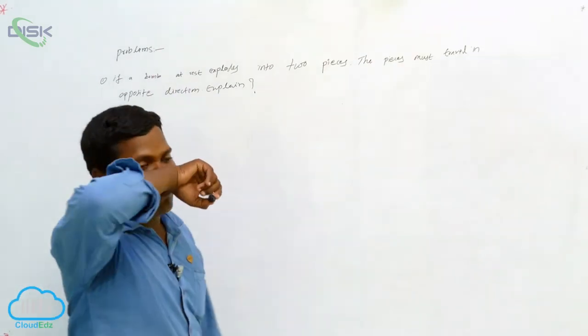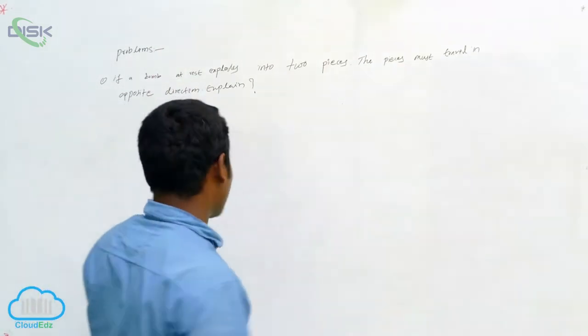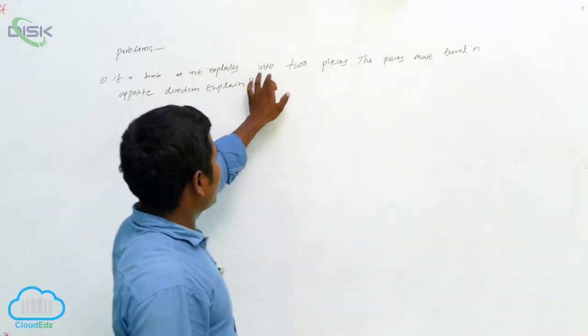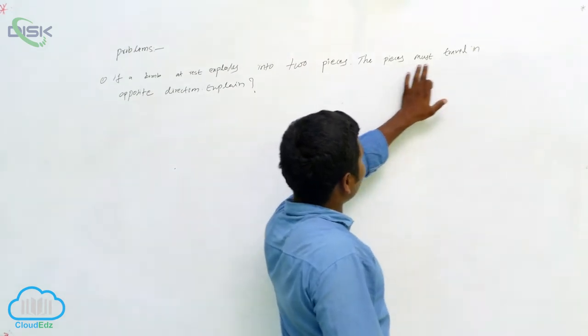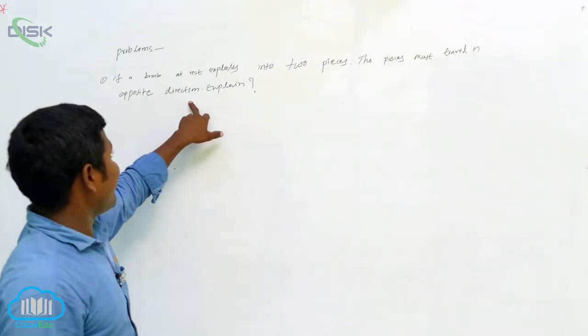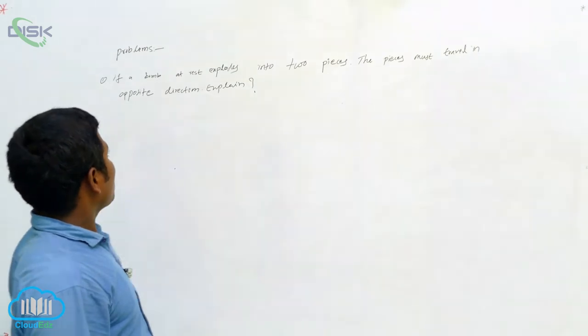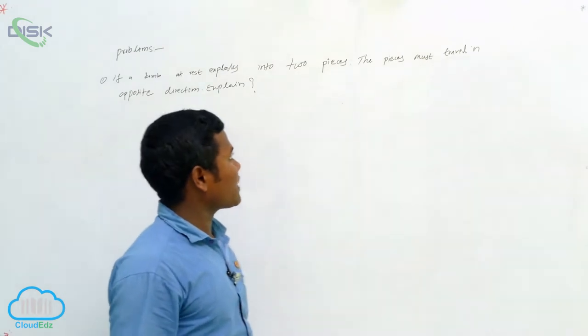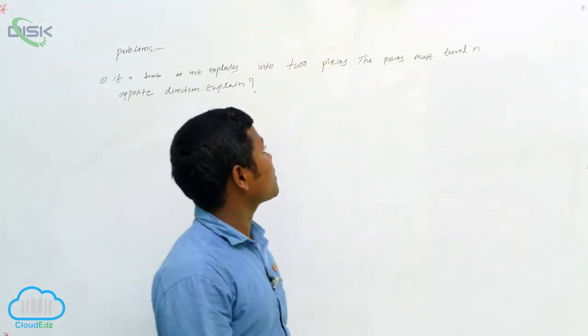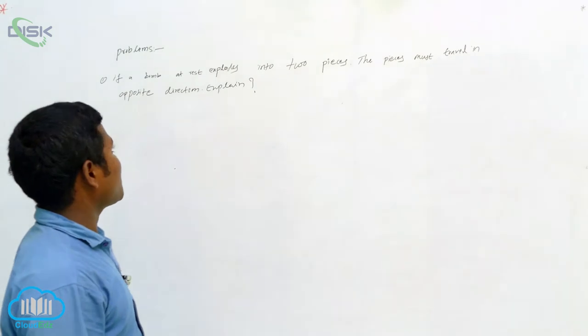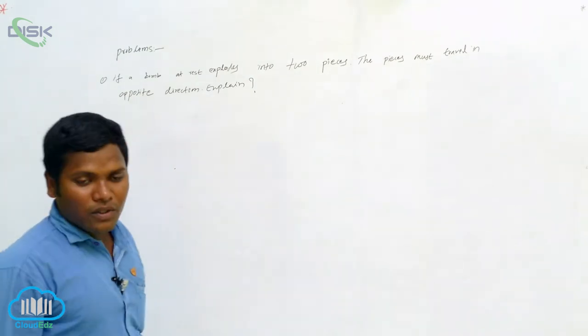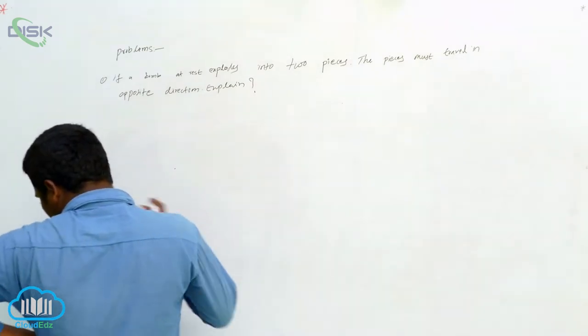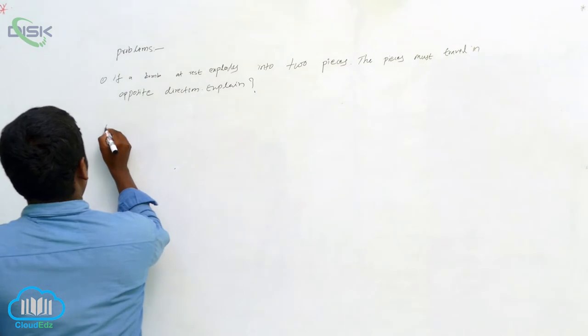Problems on conservation of momentum: If a bomb at rest explodes into two pieces, then the pieces must travel in opposite directions. Explain. Let's take the best example: one bomb is at rest, it simply explodes. After exploding, it is divided into two pieces. The pieces must be traveling in opposite directions. Based on which principle will we explain this problem? First, we have to consider the law. According to the law of conservation of momentum.